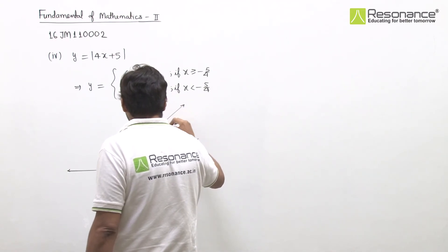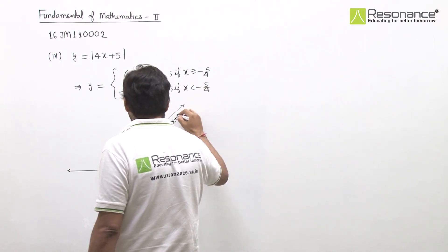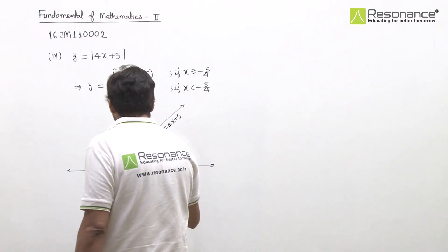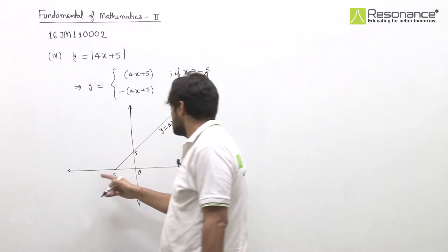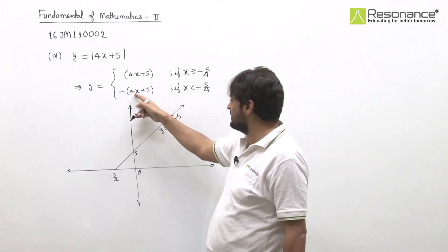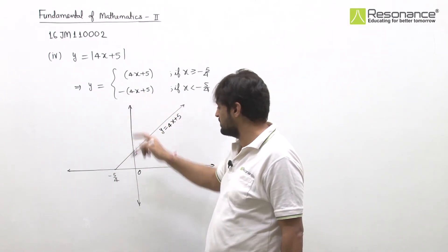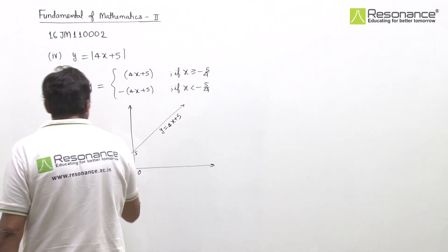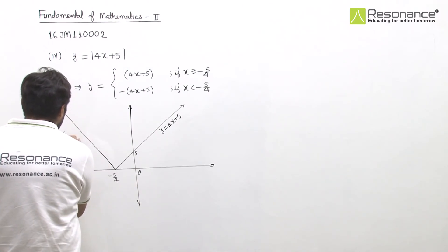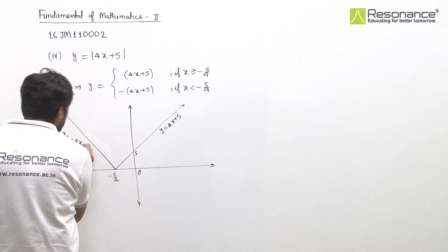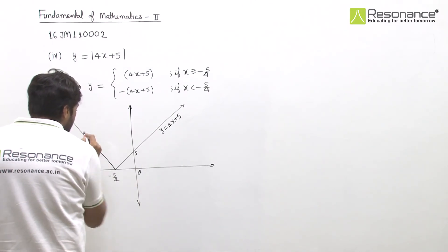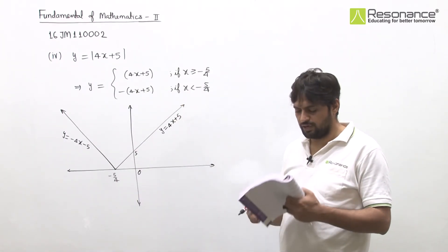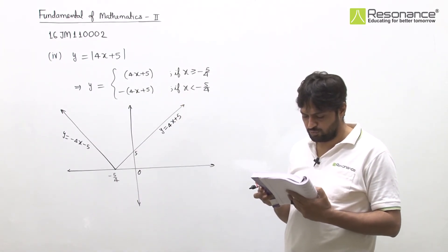So this will be the graph: a V-shape with vertex at (minus 5/4, 0), going up on both sides. This is the labeled graph of the fourth part, y equal to mod of 4x plus 5.